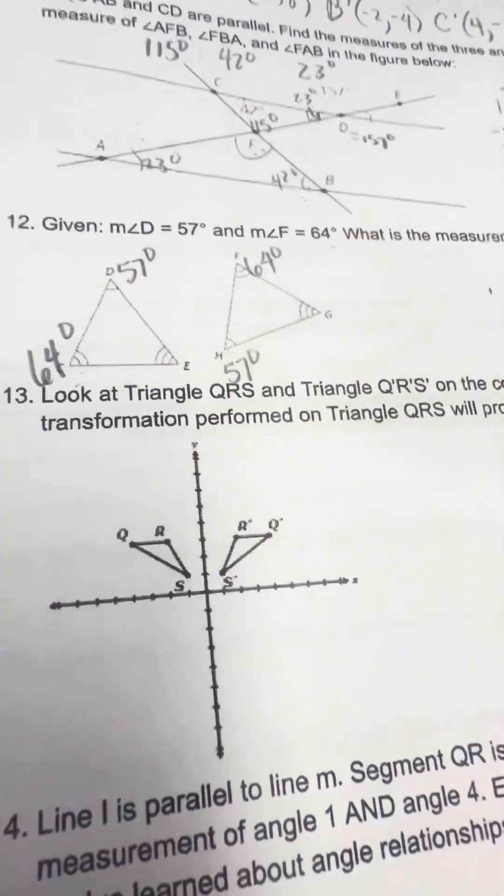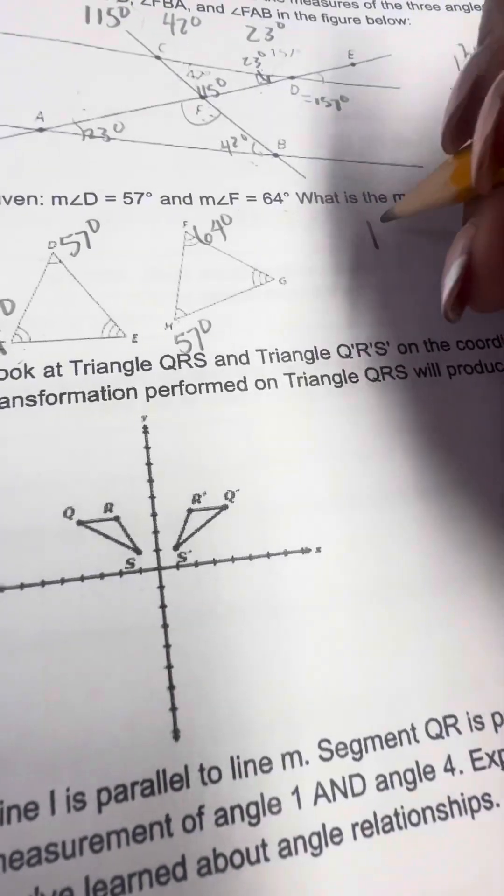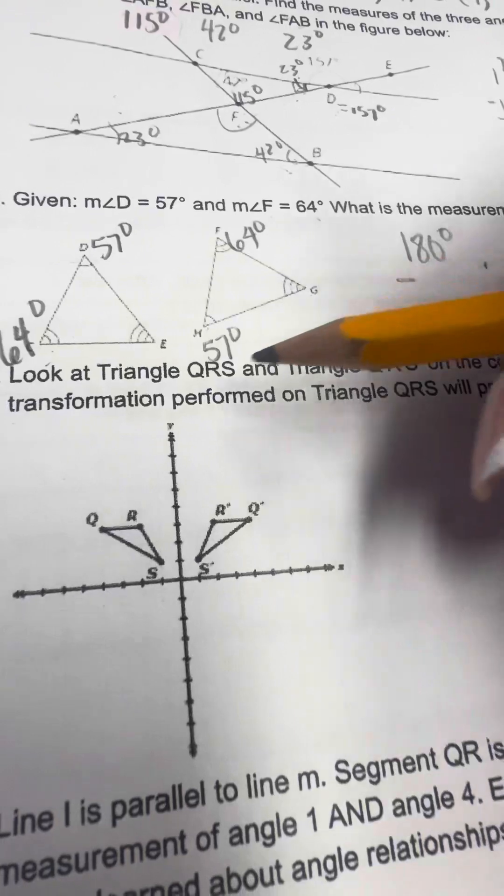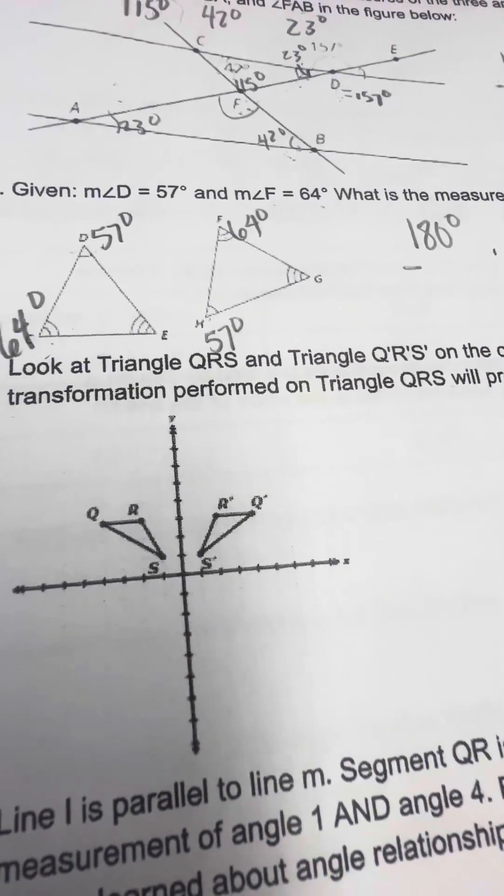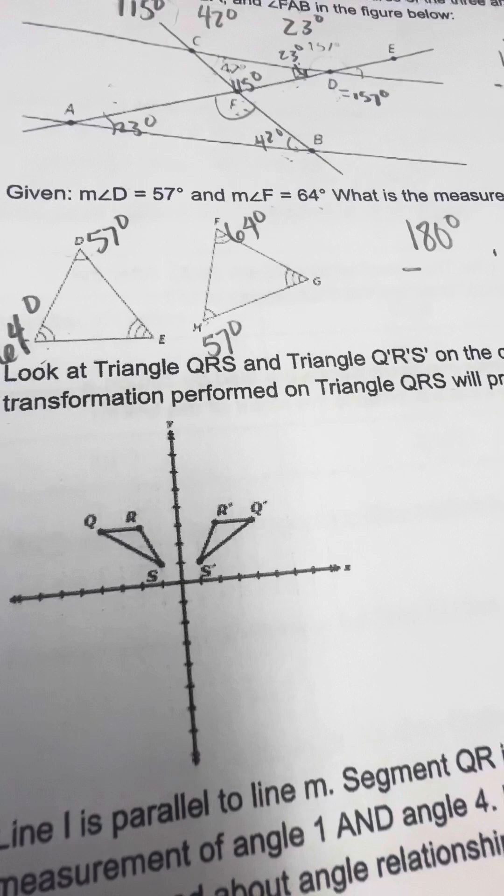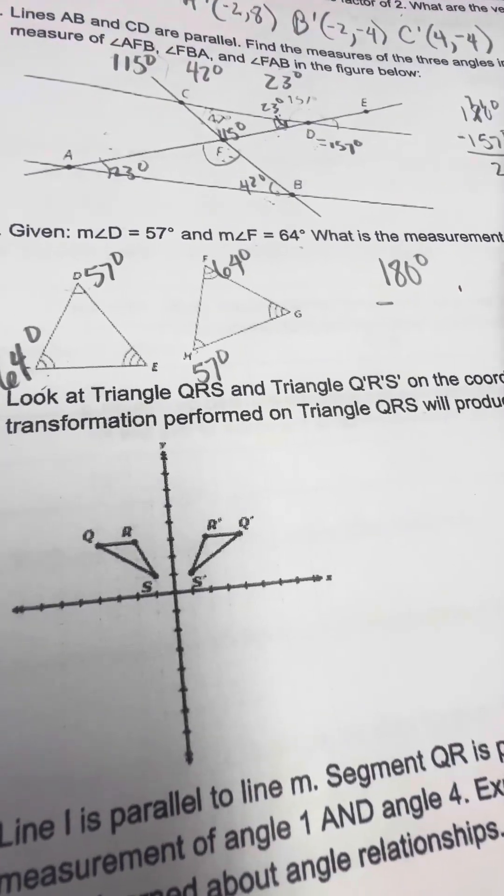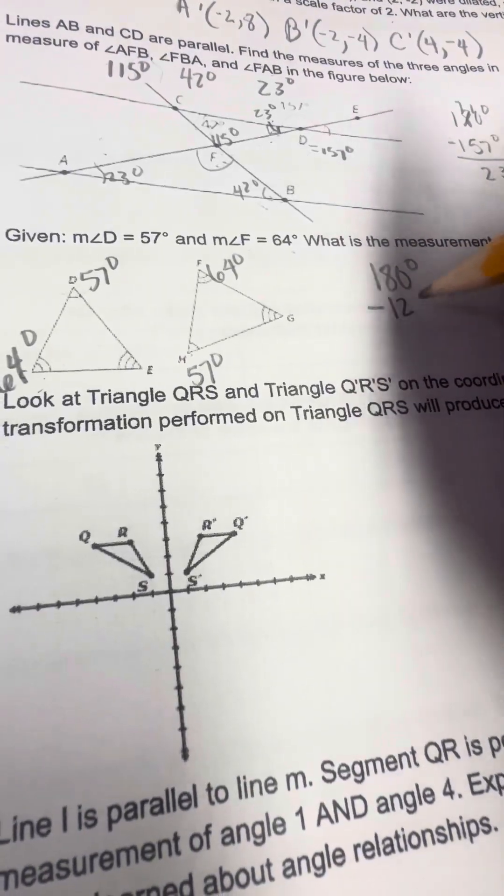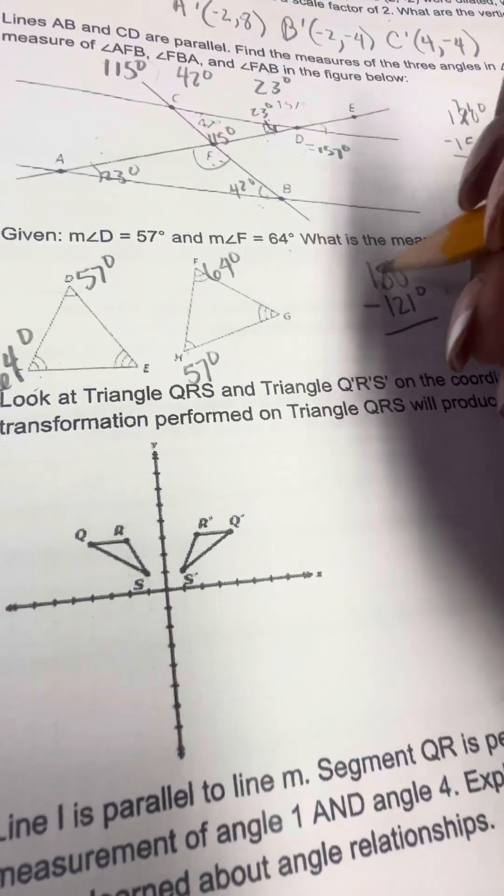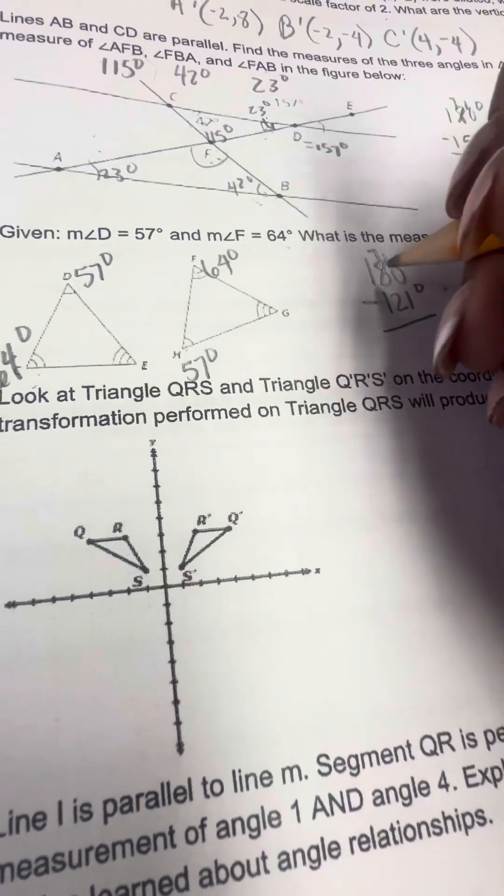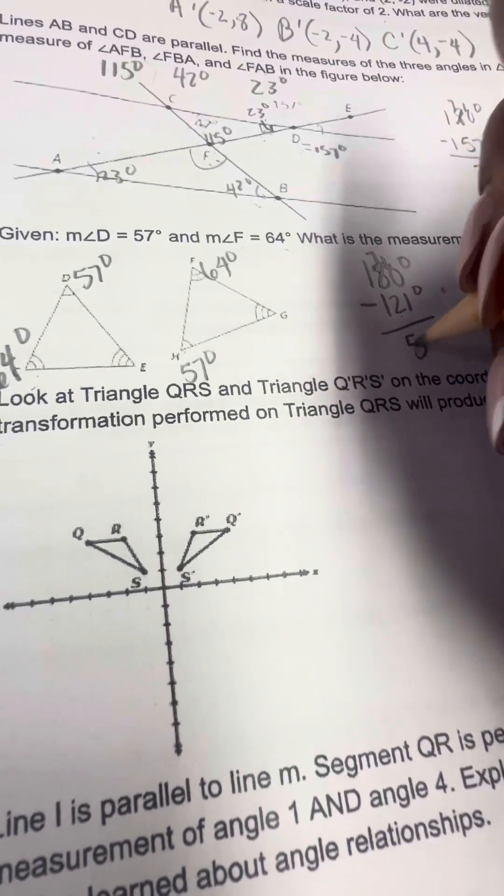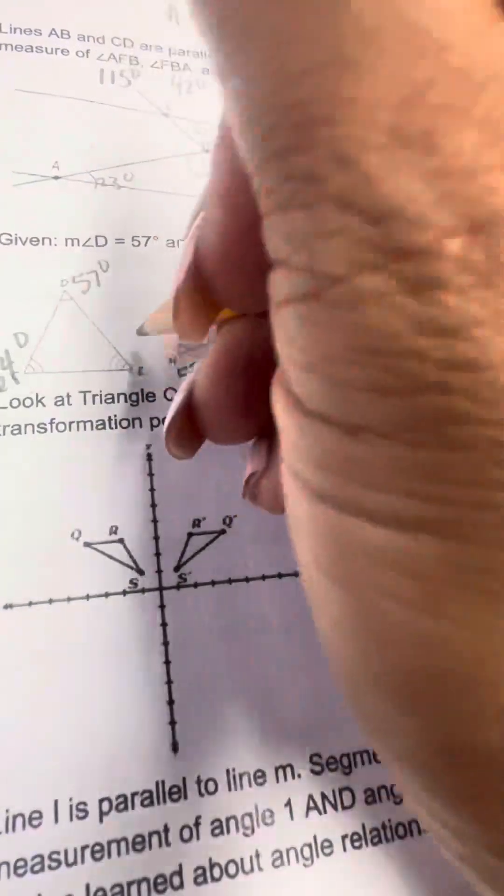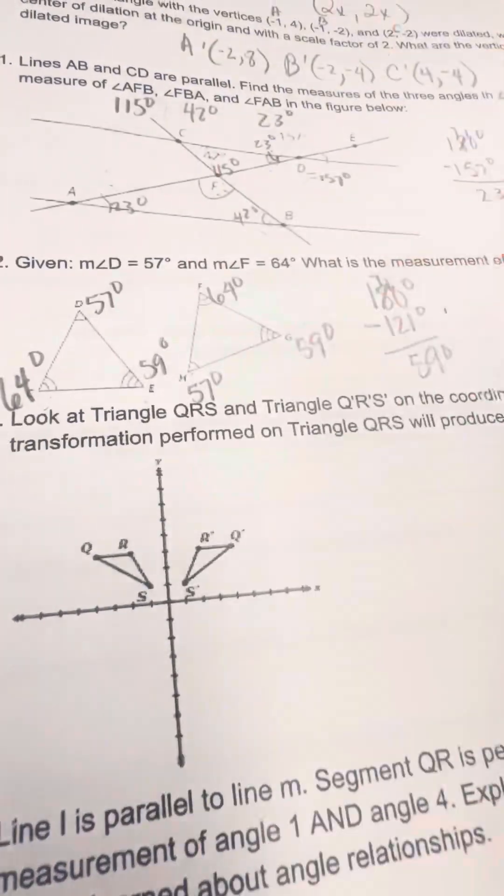Now, I know the interior angle measures of a triangle equal 180. So if I take 180 and I add 57 and 64, I get 121 degrees. So I'm going to subtract, therefore 180, borrow, this becomes a 7, carry, so it gives us 59 degrees. That means G is 59 degrees and also angle E is 59 degrees.